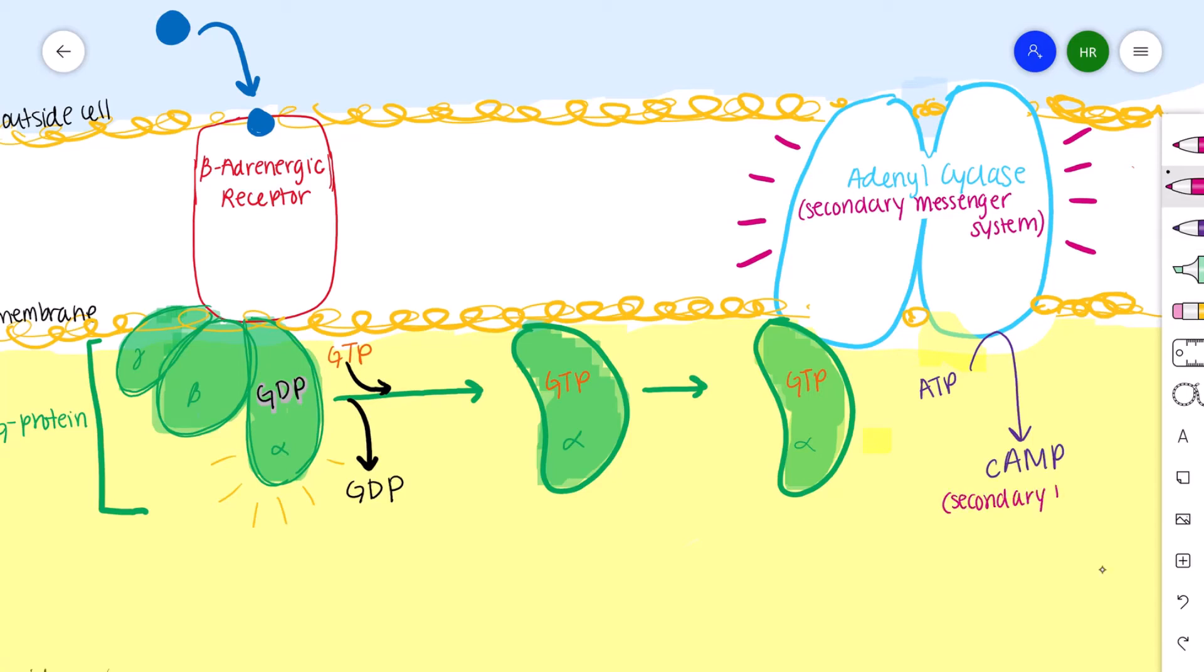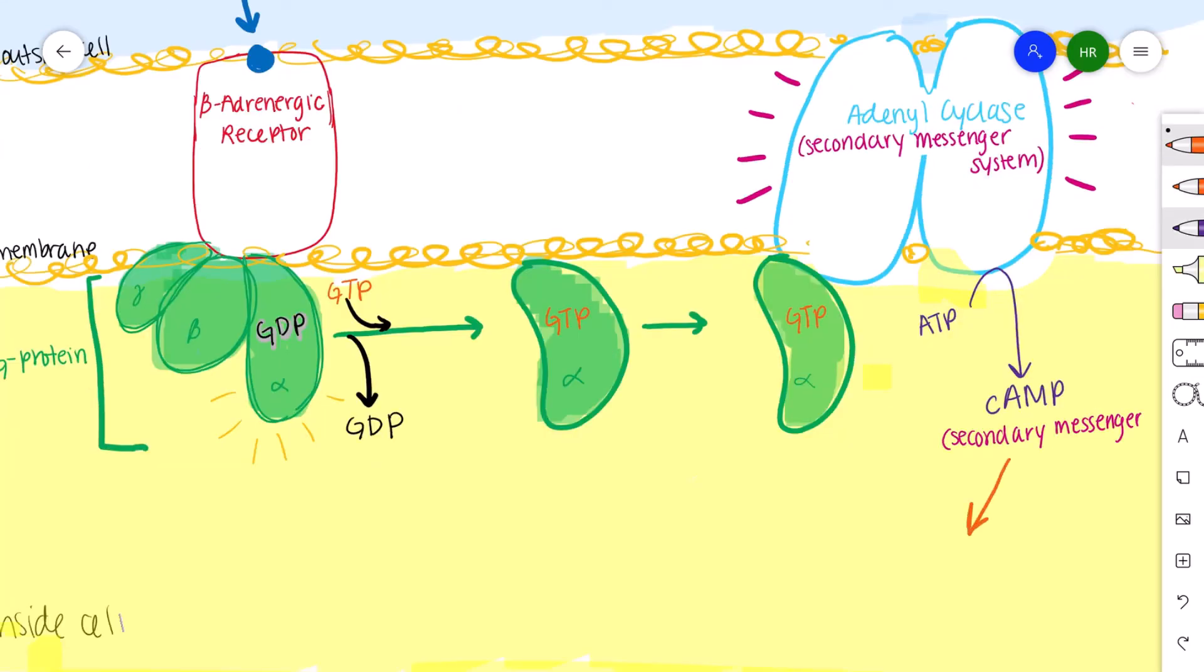cAMP, for short, is known as a secondary messenger, which actually carries the first messenger, epinephrine that we started with, into the cell.